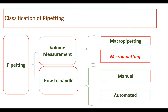Pipetting is mainly of two types. One classification is in terms of volume measurement and another is in terms of how to handle the process. When we talk about volume measurement, there are two types: one is macro pipetting and the other is micro pipetting. In terms of handling, one is manual and another is automated. In this lecture, as we are dealing mainly with molecular biology context, we will focus on micro pipetting.